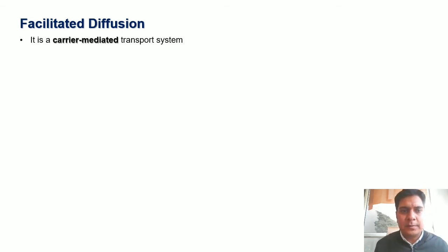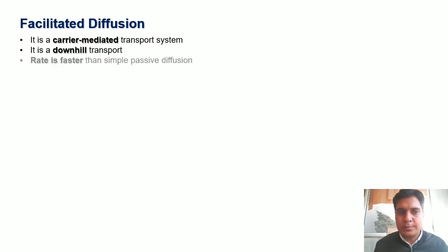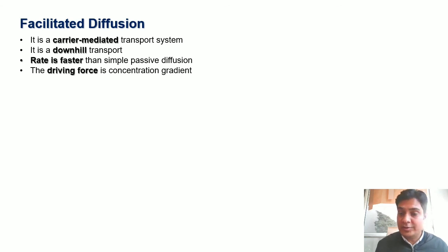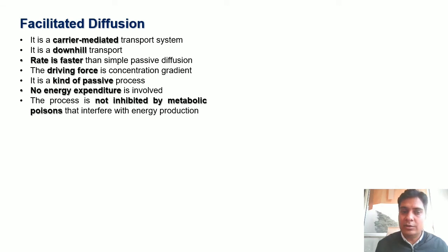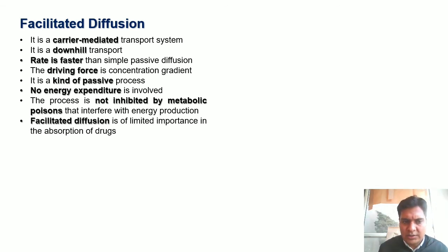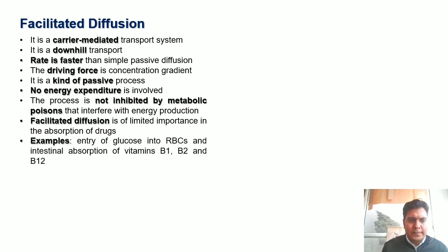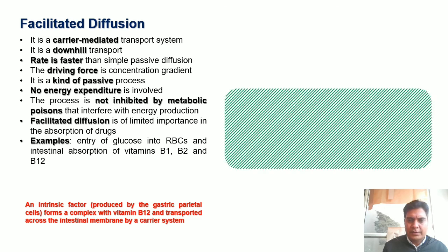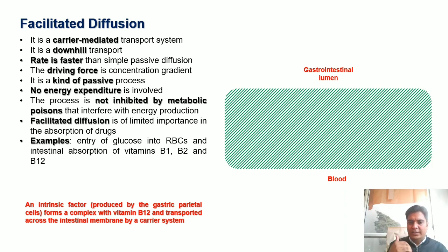The next transport mechanism is facilitated diffusion — a carrier-mediated transport that is a downhill transport. The rate is faster than simple passive diffusion due to the presence of carriers, and the driving force is the concentration gradient of the drug. It is a passive process with no energy expenditure and is not inhibited by metabolic poisons, similar to passive diffusion. Facilitated diffusion is of limited importance in drug absorption. Examples include the entry of glucose into red blood cells and intestinal absorption of vitamins B1, B2, and B12.